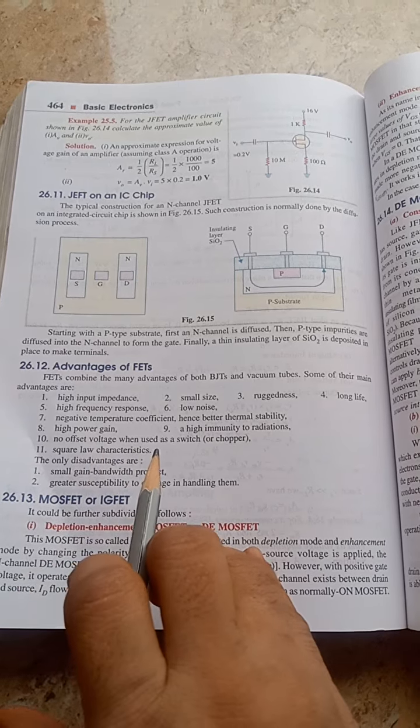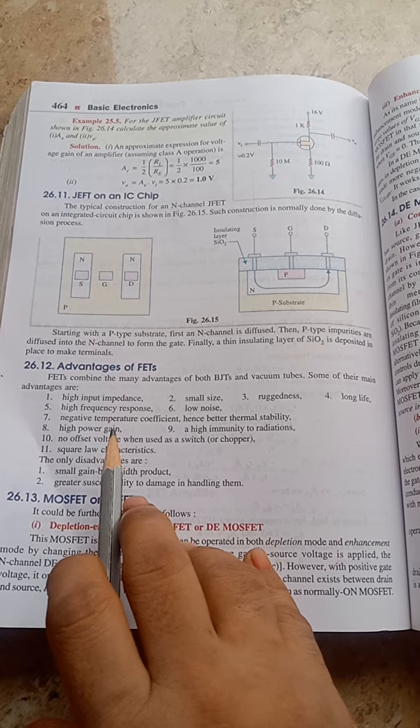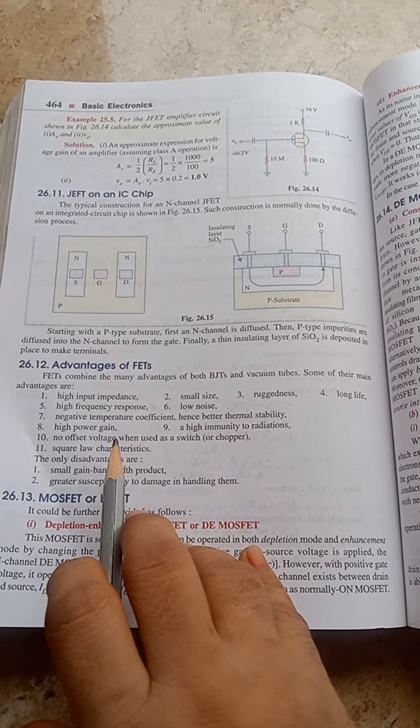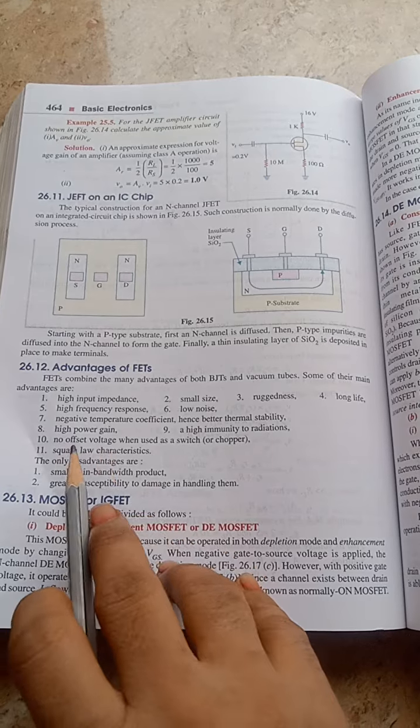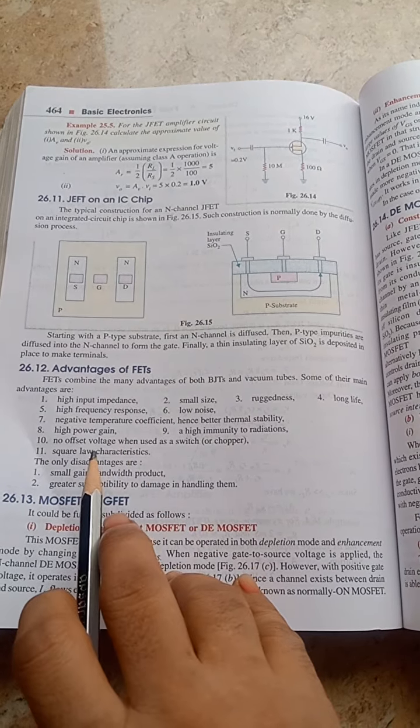High power gain - you have to know power gain is P2 by P1. High immunity to radiation, no offset voltage when used as a switch.